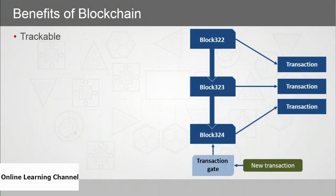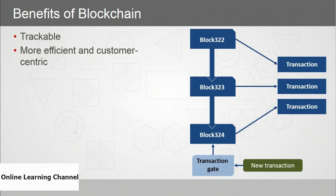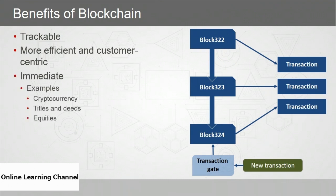And it's trackable — you can track back through every block on the chain, every record right back to the beginning of time when the ledger was first created. Blockchain is also more efficient and customer-centric, with immediate transactions: when you purchase something, ownership is transferred the moment the transaction is recorded. This is one reason why banking, logistics, real estate, and equities trading have taken notice. Blockchain can also be very cost-efficient by eliminating the need for intermediaries.